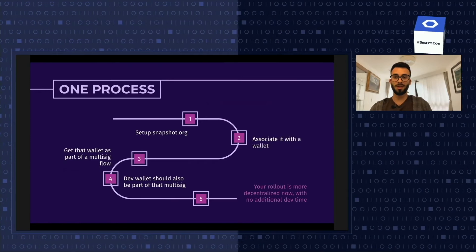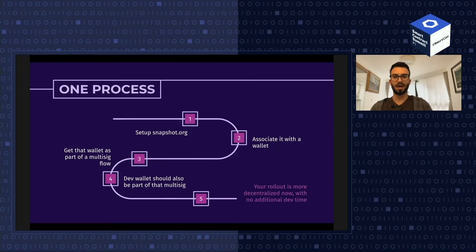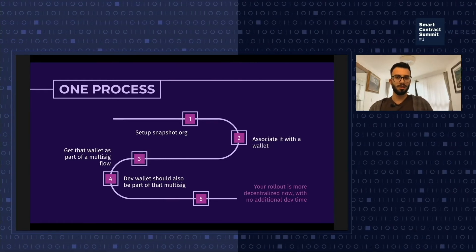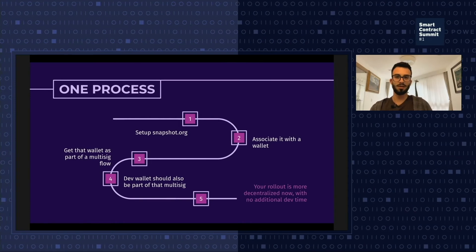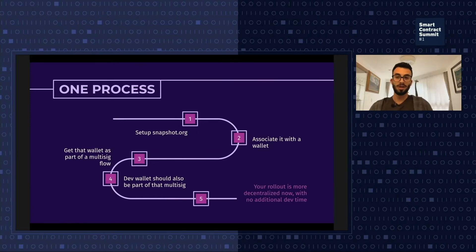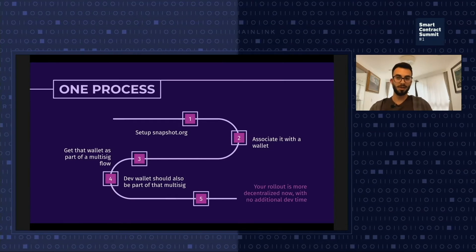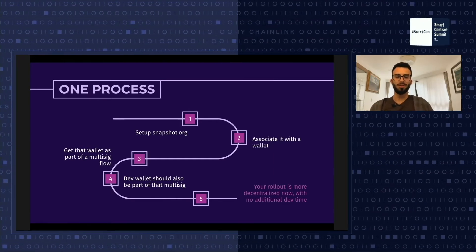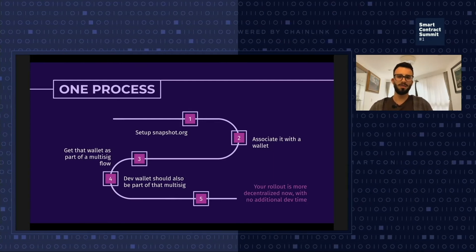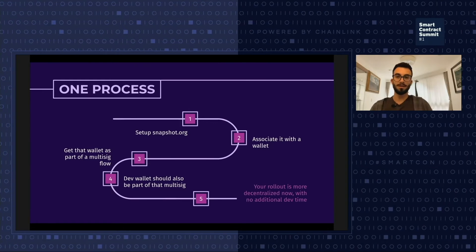I was talking to one of the Illuvium devs about implementing governance, and I think it's interesting to share that case because it's probably where most projects are. My suggestion was: set up snapshot.org for your token, associate a multi-sig wallet to it that's only for community decisions coming from snapshot. If you associate that with a vault like Gnosis Safe or OpenZeppelin Defender, and put the dev wallet in there as part of the multi-sig, it gives way more security and protection against potentially bad decisions without totally removing dev team control, while making the governance and shipping process way more decentralized and robust.